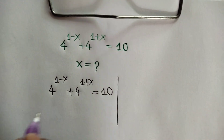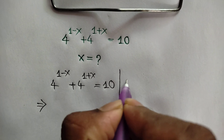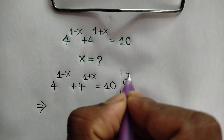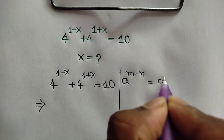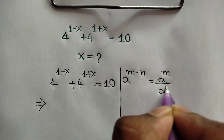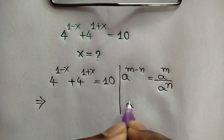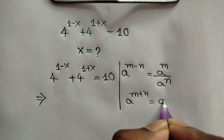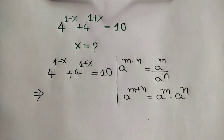Here we can apply the exponents rules: a to the power m minus n is equal to a to the power m over a to the power n. And a to the power m plus n is equal to a to the power m times a to the power n.